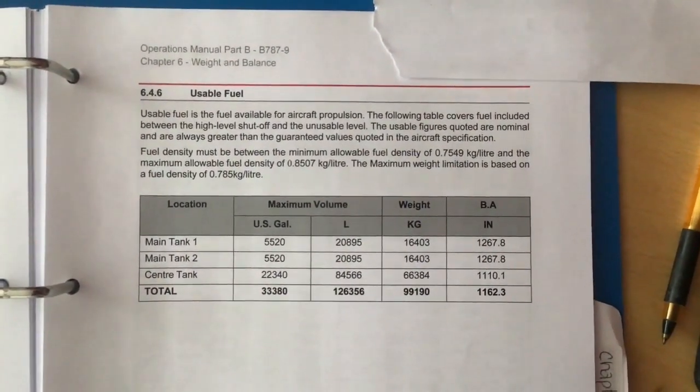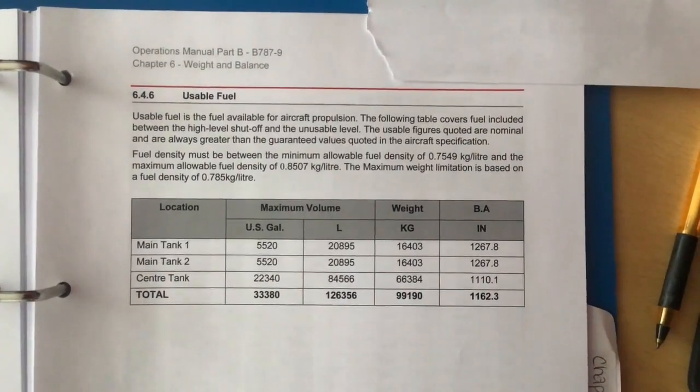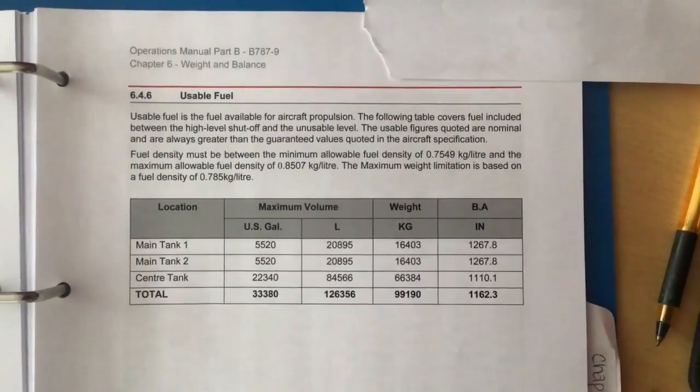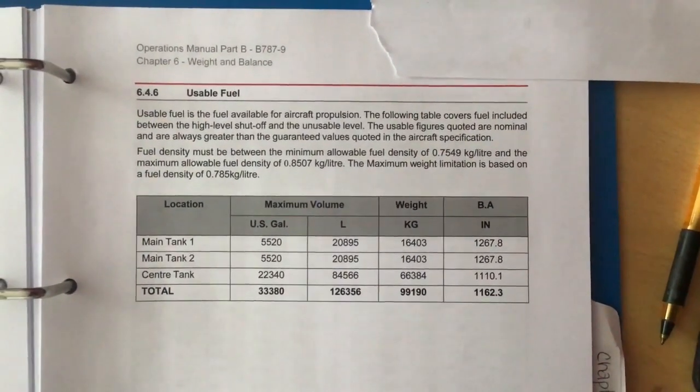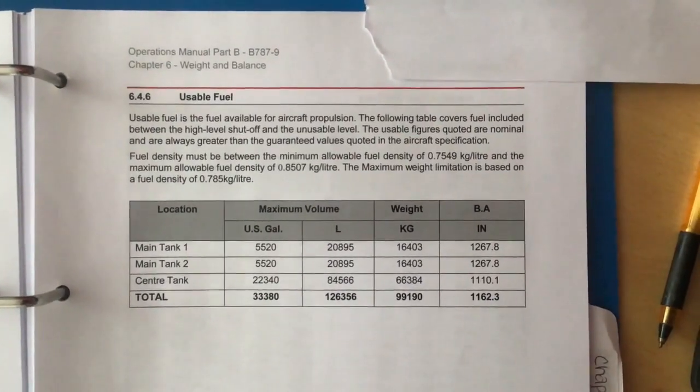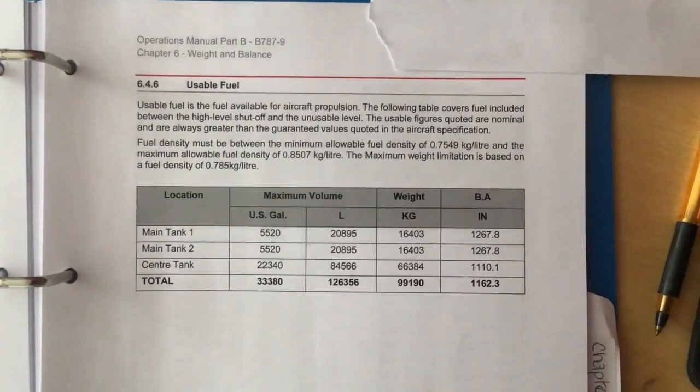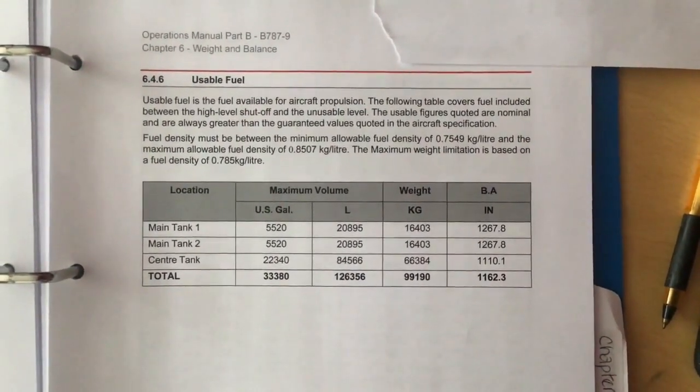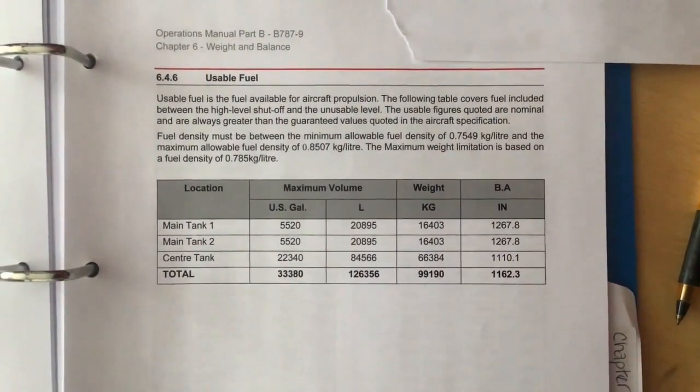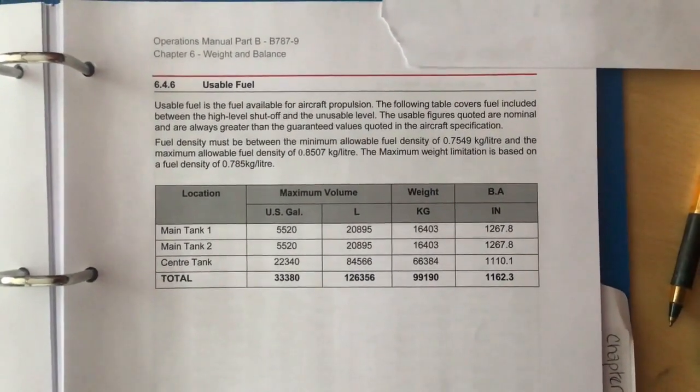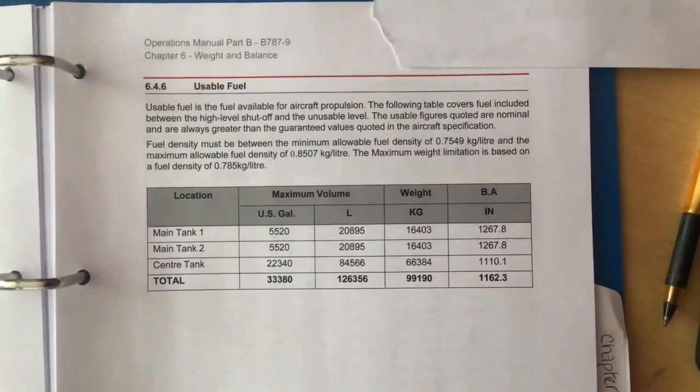The 787-9 has a maximum takeoff weight of just over 254 tons and a maximum usable fuel load of just over 99 tons. This aircraft can fly further than both 330s.